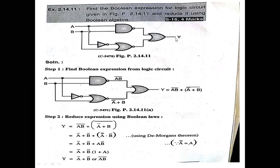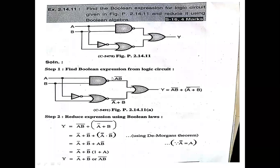We have to find the output equation Y. Looking at the diagram, the NAND gate has inputs A and B. The NOR gate is connected to a NOT gate, and then NOR is connected to B. The outputs of the NAND and NOR are passed to an OR gate. For the NAND gate output: inputs are A and B, so output is A into B bar — the complement represents the NAND output.